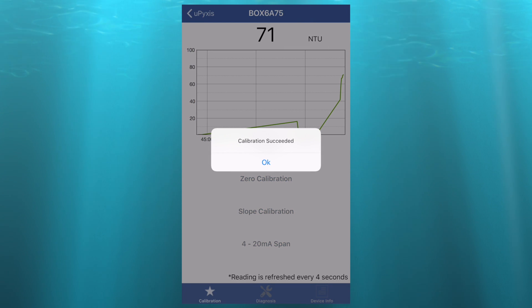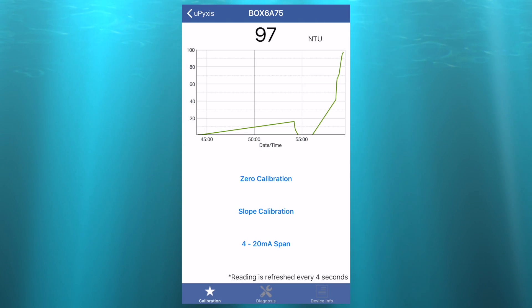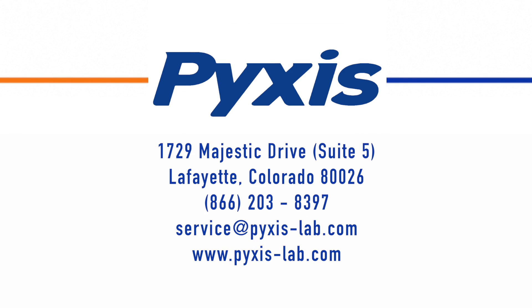A calibration success message will appear, and the readings chart will begin to read near 100. The Pixis ST730 inline turbidity sensor is now clean and calibrated.